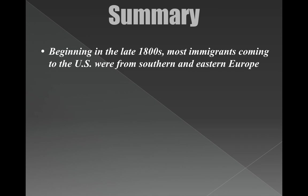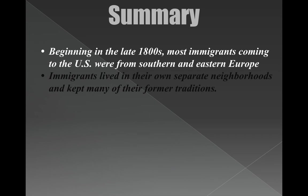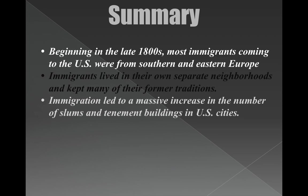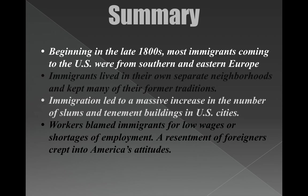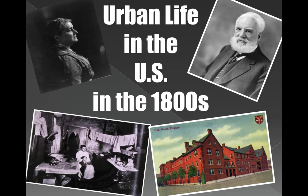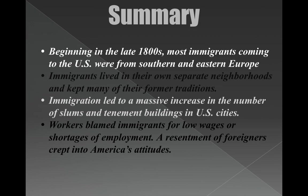In summary for immigration: beginning in the late 1800s, most immigrants came from Southern and Eastern Europe. Immigrants lived in their own separate neighborhoods and kept many of their former traditions. There was a massive increase in slums and tenement buildings in U.S. cities because of immigration. Workers blamed immigrants for low wages and shortages of employment, and you get the rise of nativism.